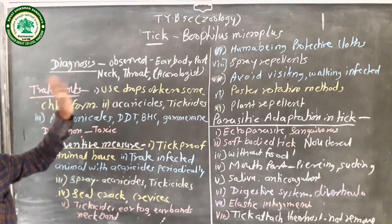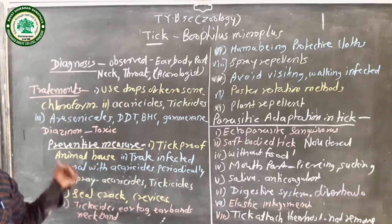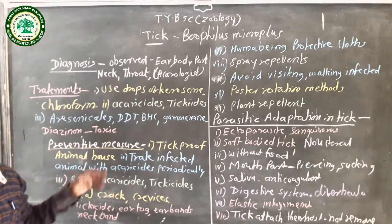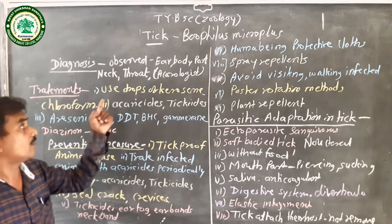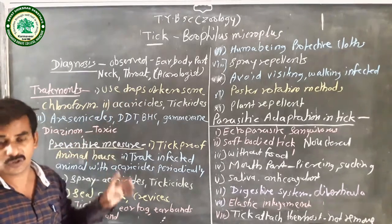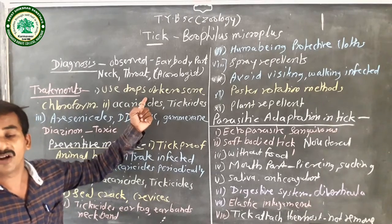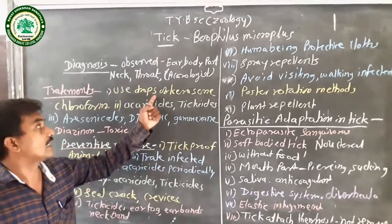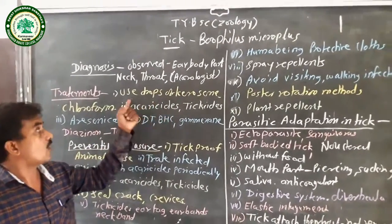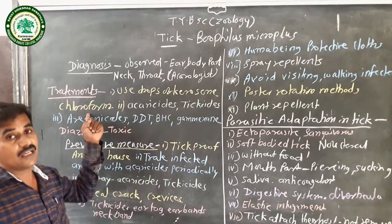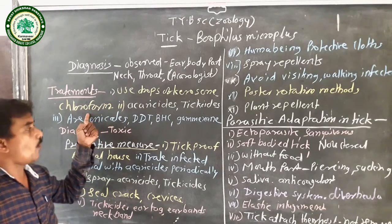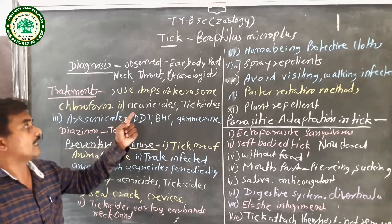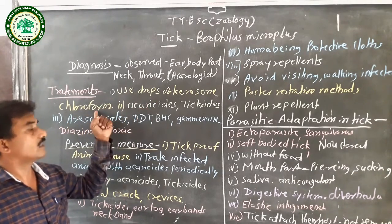Treatment is simple. In India, for milk-producing cows and economically important animals, a drop of kerosene is used to control ticks — ticks get totally eradicated in the infected area when kerosene is applied. Chloroform is another option. Both kerosene and chloroform are used as treatment.